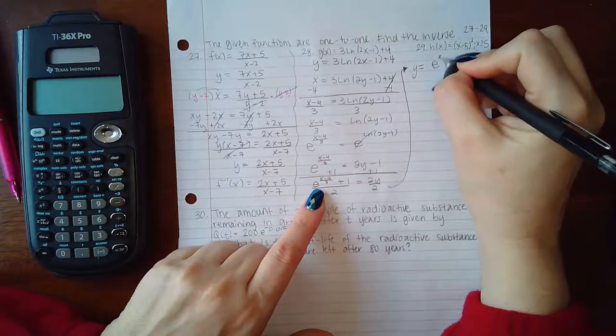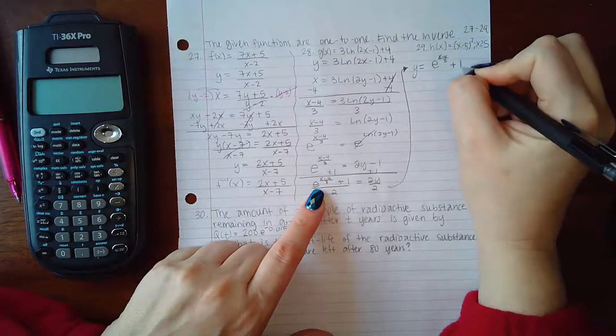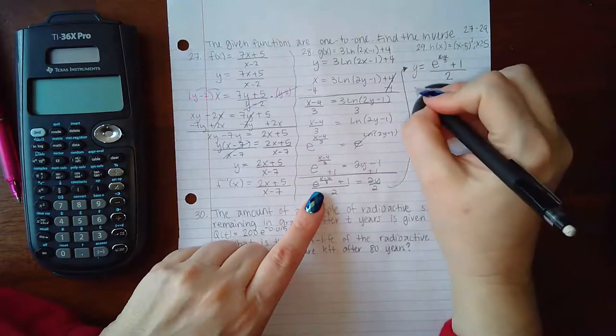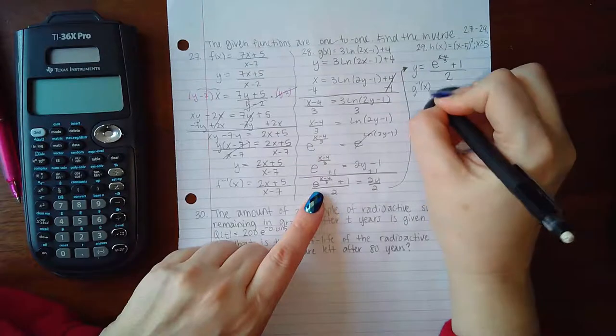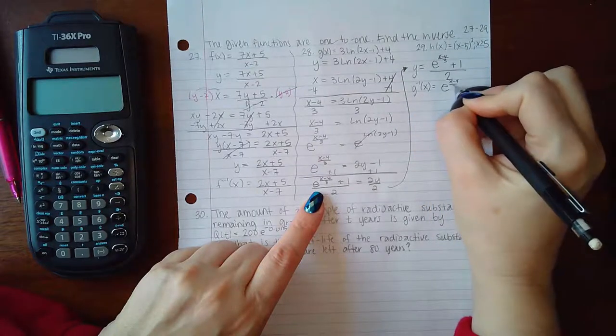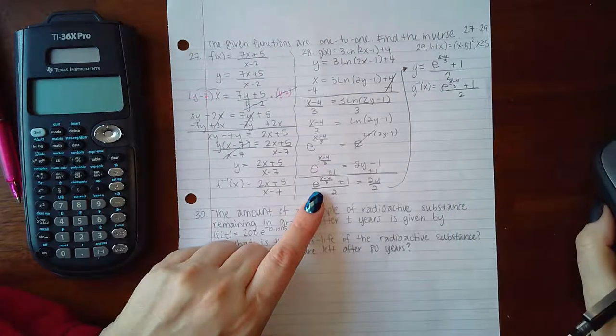And then change that notation into the inverse notation, and we get [e to the (x minus 4) over 3 plus 1] over 2, and so that's the inverse that we get there.